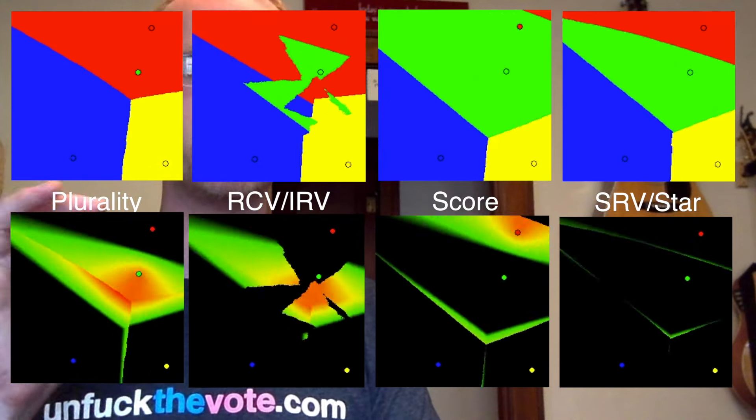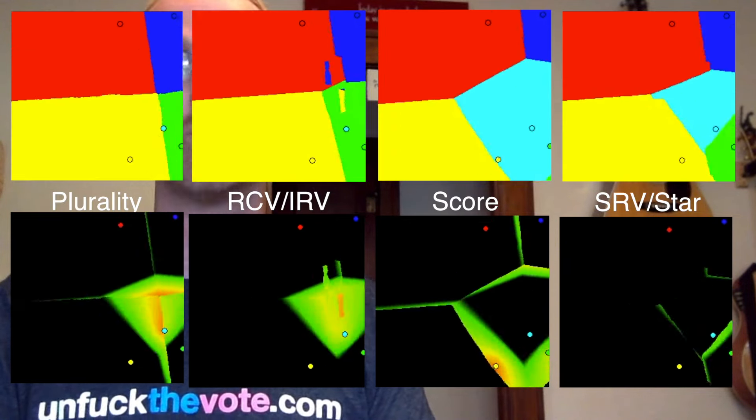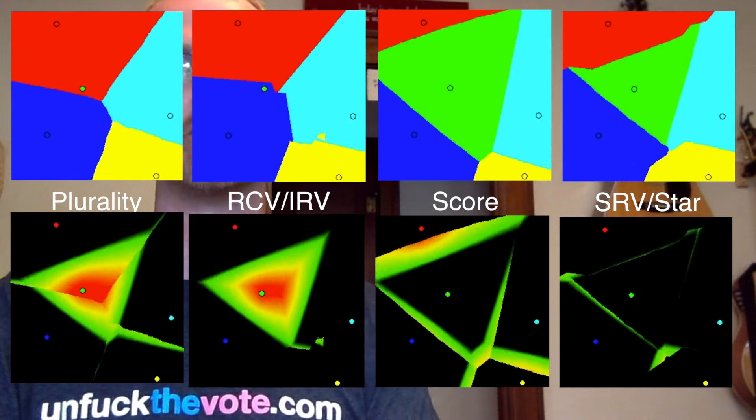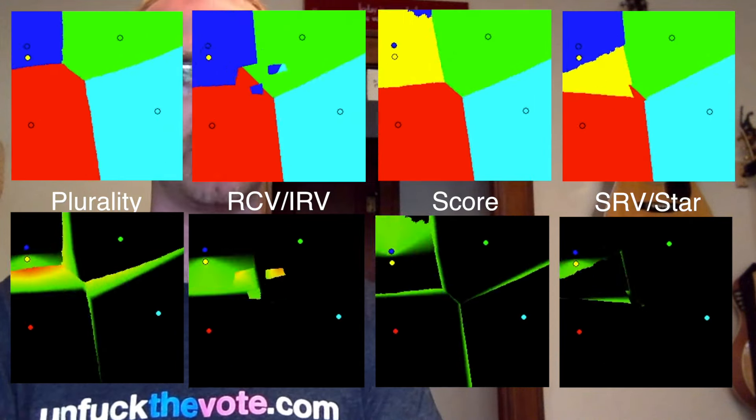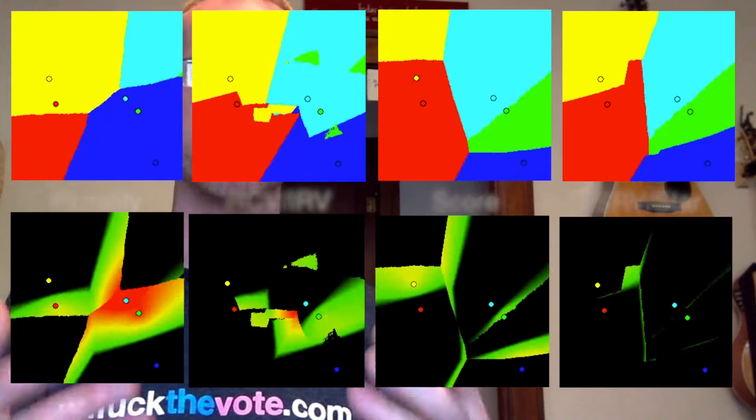This visualization begins to get at the much more sophisticated voting method simulation work, such as Warren Smith's Bayesian regret models or Jameson Quinn's voter satisfaction efficiency, where they have much more complex distributions of voters and strategy models, where you have a certain number of voters behaving strategically and not. What's interesting about that is that those simulations, those much more sophisticated simulations, actually come up with very similar results in terms of the four systems presented here.